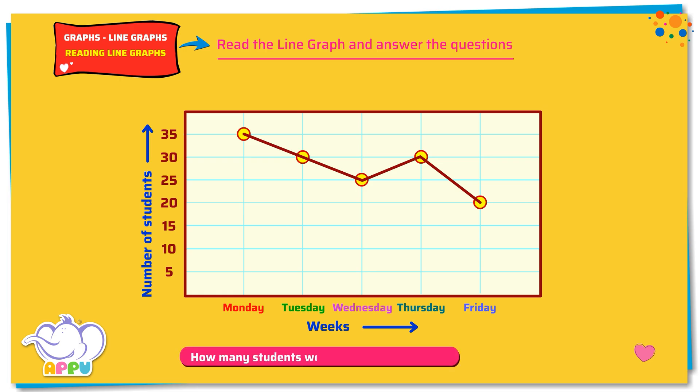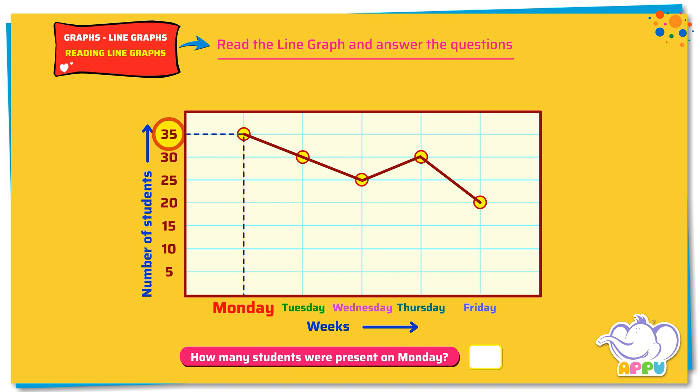How many students were present on Monday? To know the number of students present on Monday, we see the dot for Monday, and the number on the left is 35. So 35 students were present on Monday.